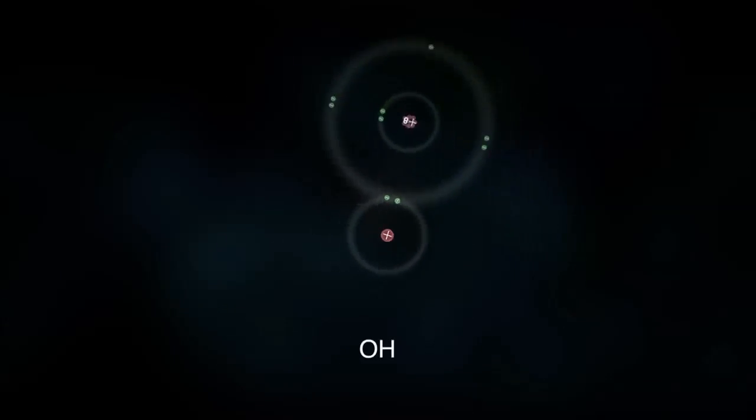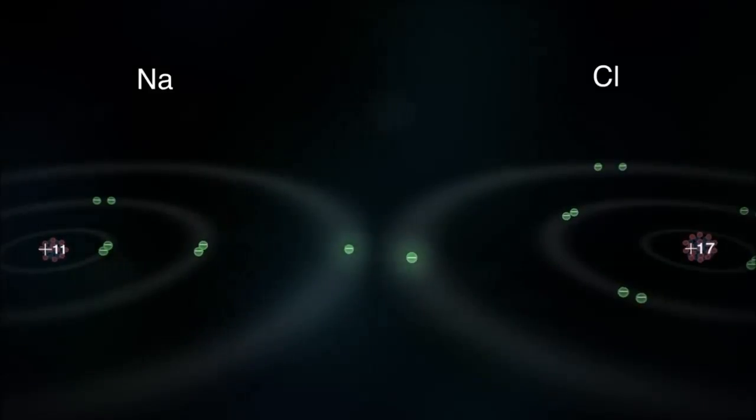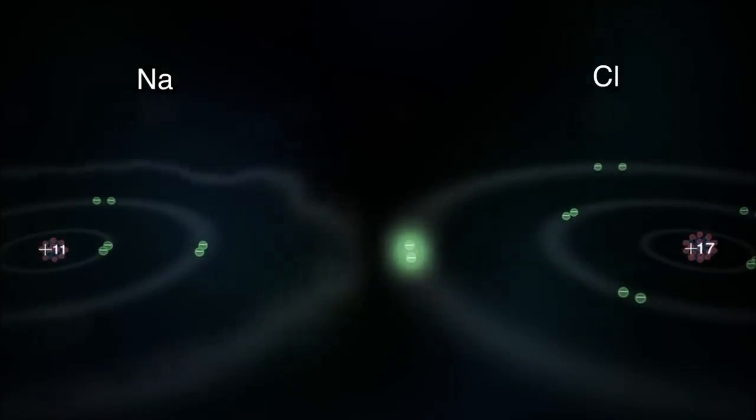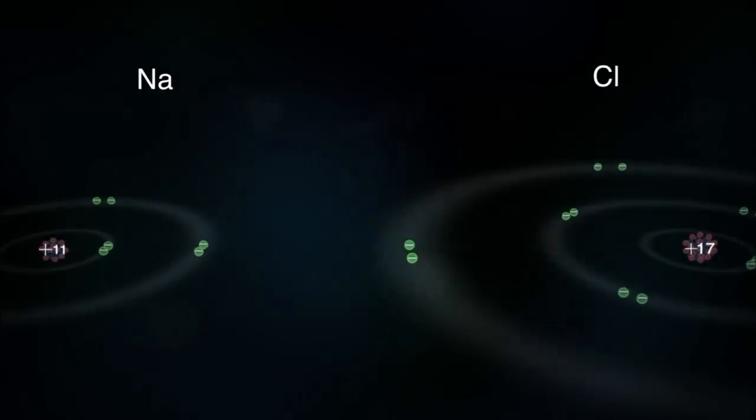Bonds can form between atoms of the same element or atoms of different elements. You've probably imagined bonding as a tug of war. If one atom is really strong, it can pull one or more electrons off another atom.